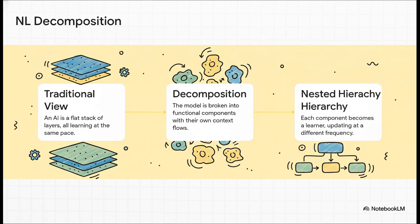Let's break down how this actually works. Traditionally, we see an AI as just a flat stack of layers, right? A simple monolith. But nested learning says, let's decompose that. Let's break the model down into its functional parts and then rebuild it as a hierarchy. Now, each part is its own learner, updating at its own pace. The paper uses this great analogy of a complex mechanical watch. Some gears are spinning every second. Others turn once an hour. That's the idea here. It's a whole system of interconnected learners, all working together at different speeds.